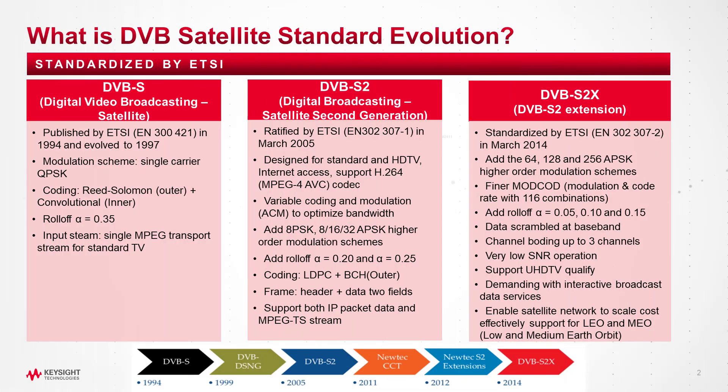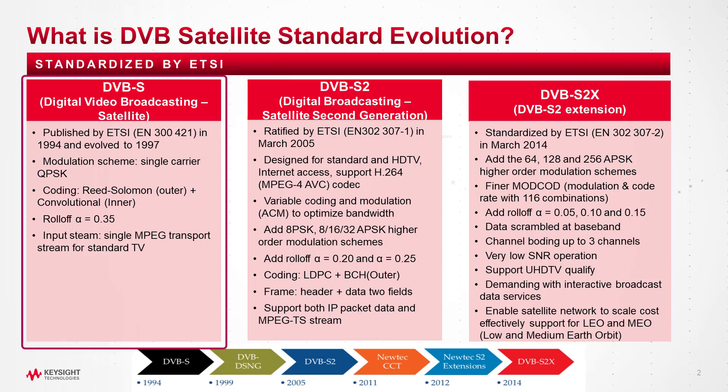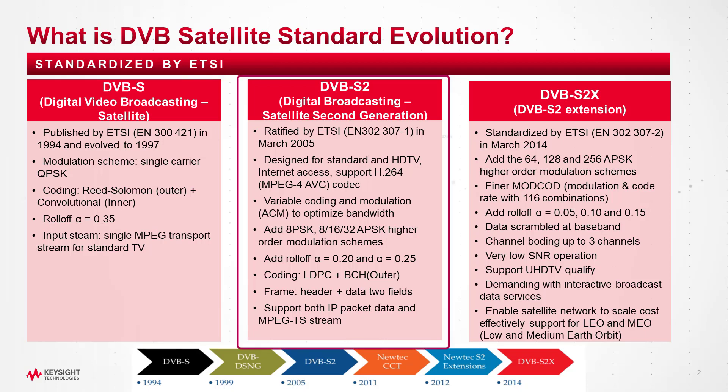Digital video broadcasting for satellite was first introduced in 1994 by ETSI. It uses single-carrier QPSK modulation with fixed roll-off of 0.35. The initial purpose for DVB-S is for transmitting the MPEG stream for standard TV.